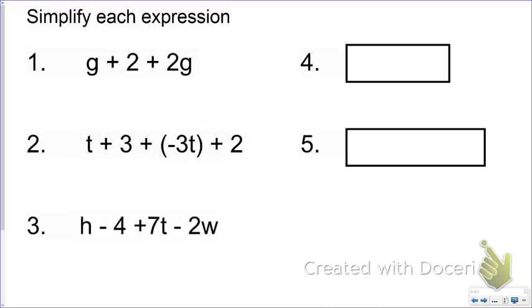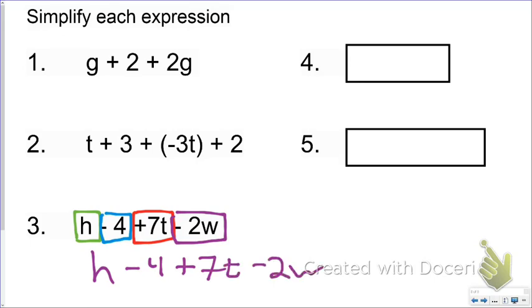Go ahead and try number 3. This one is tricky. I have an H here, but are there any other H's? No. I have a negative 4 here, but are there any other terms without a variable? Nope. I have a 7T here, but there's no other T, and then I have negative 2W—there's no W. So my simplified expression is H minus 4 plus 7T minus 2W. I can't combine any of those terms because none of those terms are like each other.